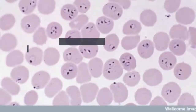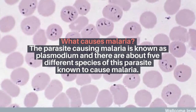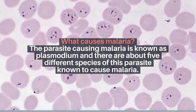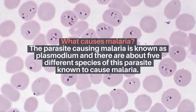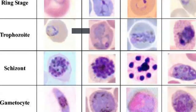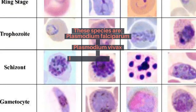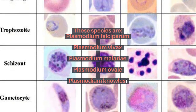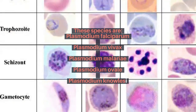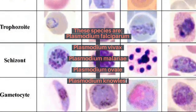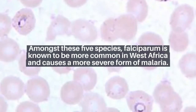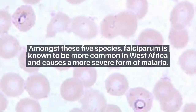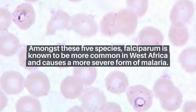What causes malaria? The parasite causing malaria is known as Plasmodium, and there are about five different species of this parasite known to cause malaria. These species are Plasmodium falciparum, Plasmodium vivax, Plasmodium malariae, Plasmodium ovale, and Plasmodium knowlesi. Amongst these five species, falciparum is known to be more common in West Africa and causes a more severe form of malaria.